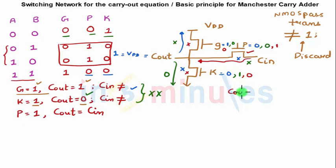Again, I said that we will forget the drawback that it cannot pass a perfect one. This is just a concept. So this is just the basic principle of the switching network for this carry-out equation which we will be using in the Manchester carry adder which we will see very soon. Hope you have followed this concept. We have got our C out with just three transistors using generate, propagate, and kill.